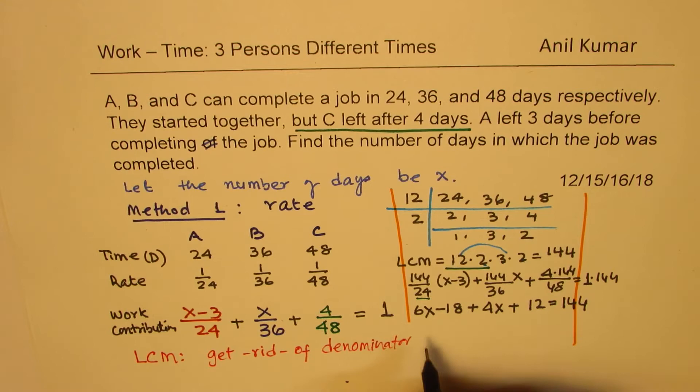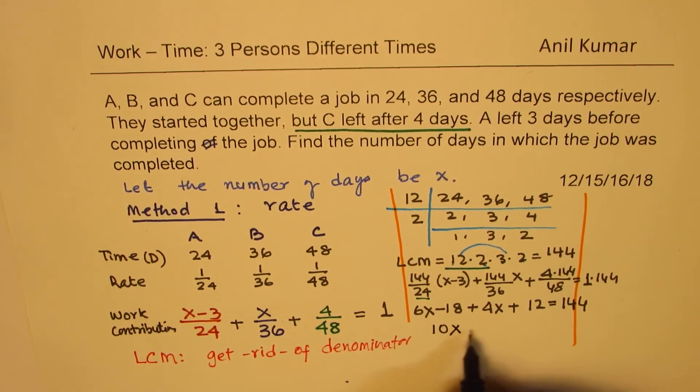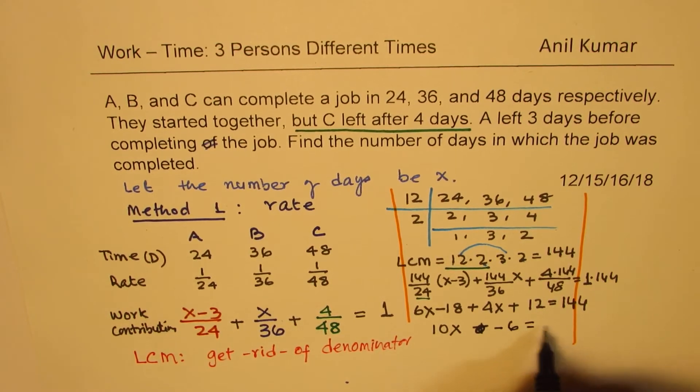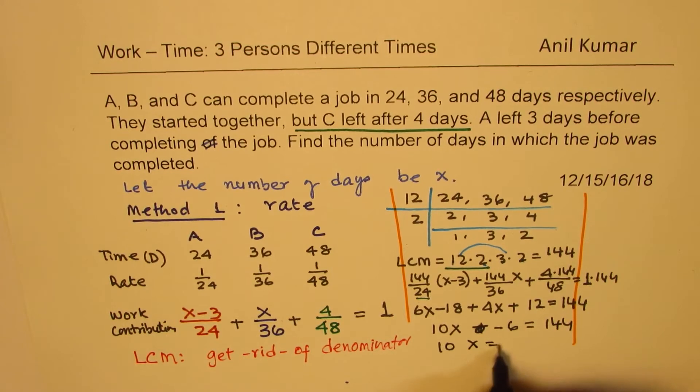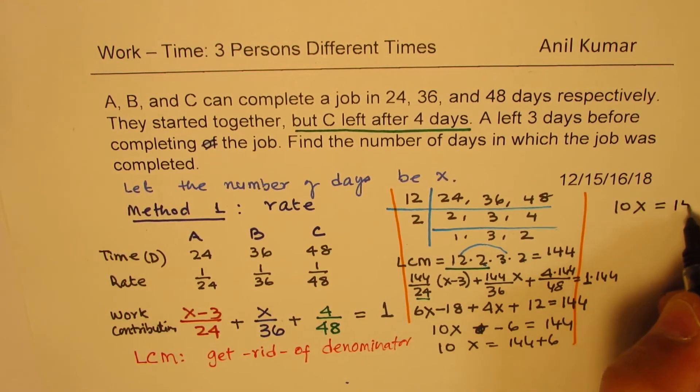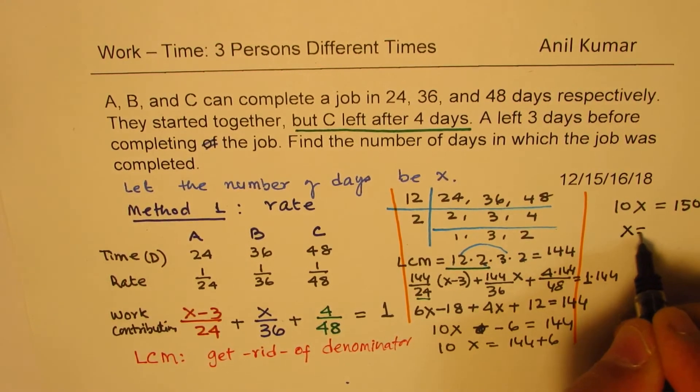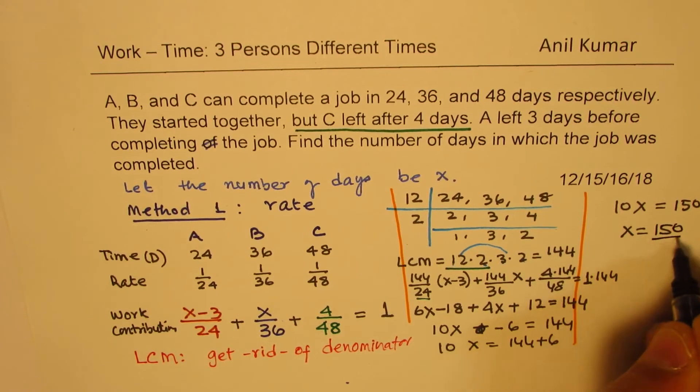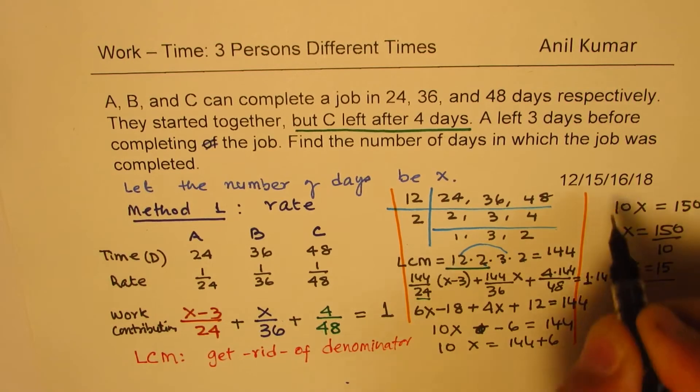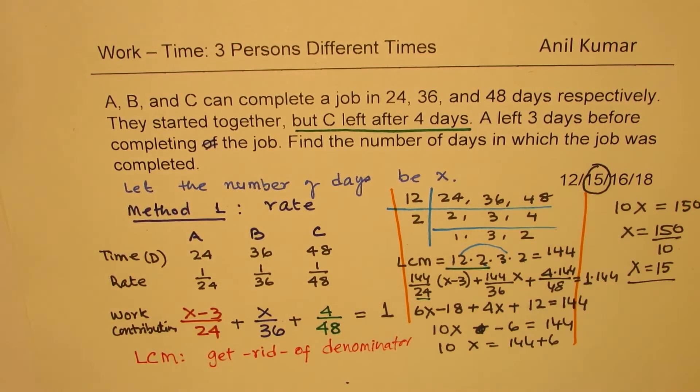Now, 6x plus 4x is 10x. Minus 18 plus 12 is minus 6, which equals 144. And so we have 10x equals to 144 plus 6. We have 10x equals to 150. So x is equals to 150 over 10. So we get x equals to 15. So option 15 is the correct option.